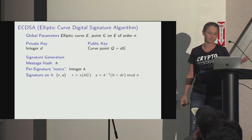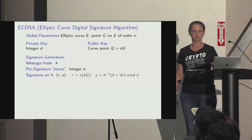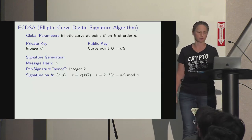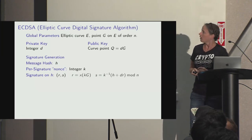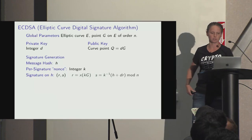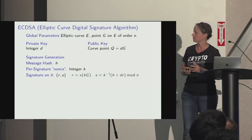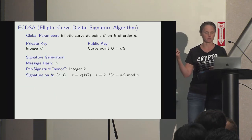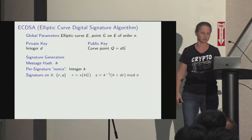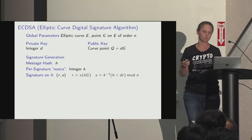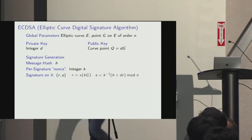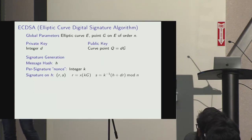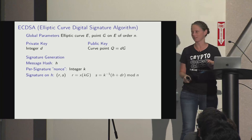ECDSA is a randomized signature scheme with a per-signature nonce K — essentially an ephemeral private key. The signature is a pair R and S: R is the X coordinate of K times the generator point, and S is K-inverse times (hash of message plus private key times R), mod N. This K is extremely important.